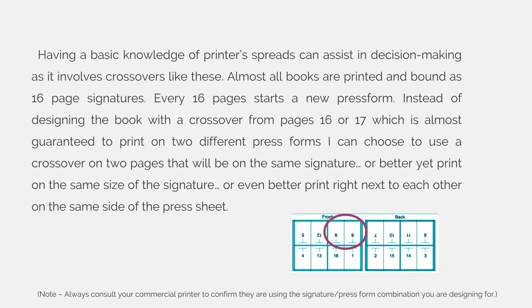Having basic knowledge of printer spreads can assist in decision making as it involves crossovers like these. Almost all books are printed and bound as 16-page signatures, and every 16 pages starts a new press form. Instead of designing the book with a crossover from pages 16 to 17 — which is almost guaranteed to print on two different press forms — I can choose to use a crossover on two pages that will be on the same signature. Or better yet, I can print them on the same side of the same signature. Or even better yet, we can print them right next to each other on the same side of the press sheet. If they're literally touching, we do not have to worry about the crossover lining up when we bind the book.